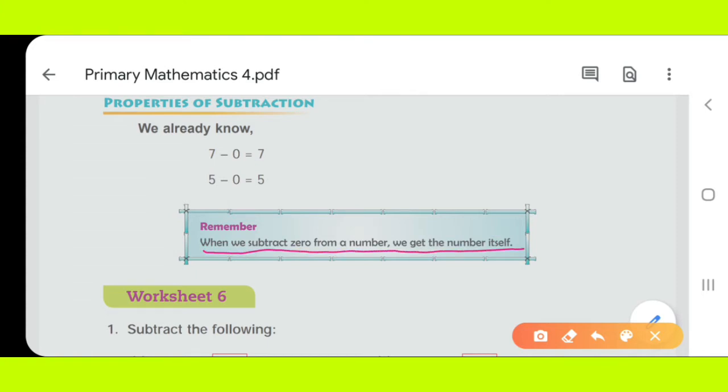As you can see here, 7 minus 0, you will get 7. And 5 minus 0, that means you get 5 here. So, whenever you subtract 0 from...